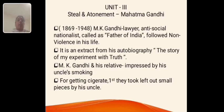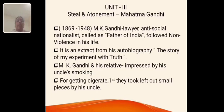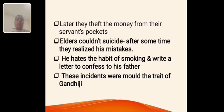Next is Unit 3, Prose. Steal and Atonement is by Mahatma Gandhi. M.K. Gandhi was born in the year 1869 and died in 1948. He is a lawyer and a social nationalist, also called Mahatma and the father of the nation. He followed non-violence in his life. Steal and Atonement is an extract taken from his autobiography, The Story of My Experiments with Truth. While he was a small boy, he was influenced by his uncle into a smoking habit. He stole money to fund it. After some time, he felt ashamed and stopped that habit. He even tried to commit suicide for his mistake. At last, he admitted his mistake to his father and decided he would never do such a thing again.